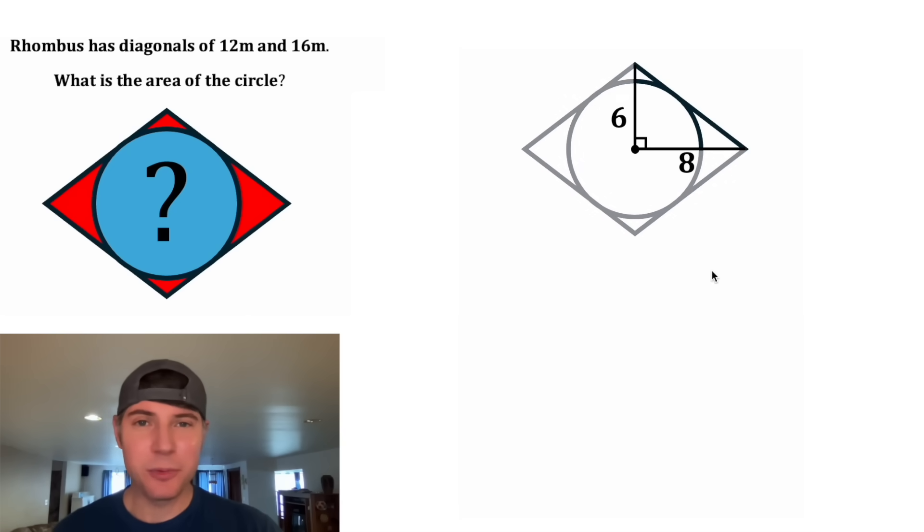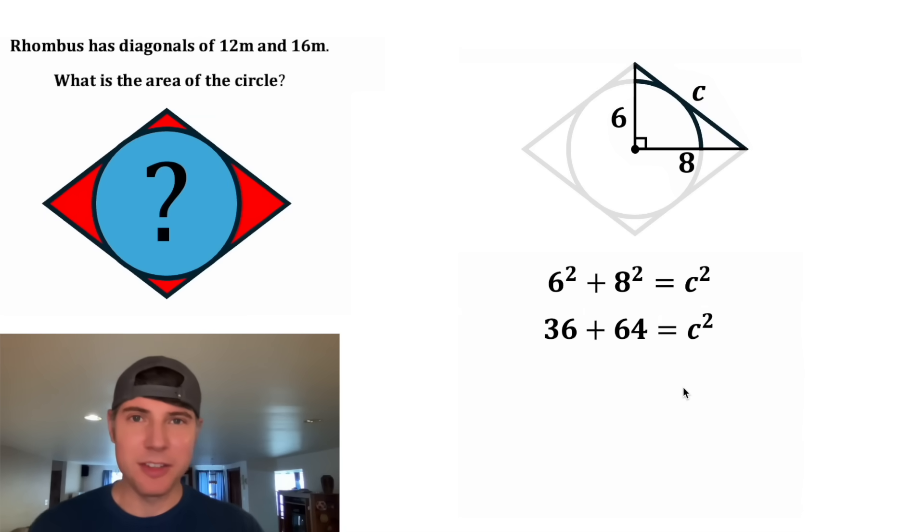Next, let's focus on this right triangle. Let's label the hypotenuse C, and we can do the Pythagorean theorem. It's going to be 6 squared plus 8 squared is equal to C squared. 6 squared is 36, plus 8 squared is 64, and then we can bring down the C squared. 36 plus 64 is equal to 100, and then we can square root both sides of the equation to give us C is equal to 10.